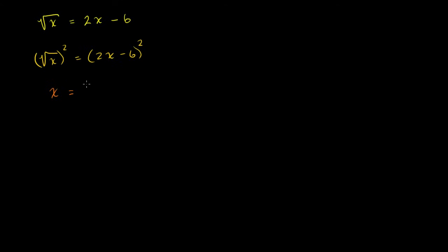We get x is equal to (2x minus 6) squared, which expands to 4x squared minus 24x plus 36. If you found that expansion difficult, you might want to review multiplying binomials or the special case of squaring binomials. It's the first term squared, minus 2 times the product of the two terms, plus the last term squared.